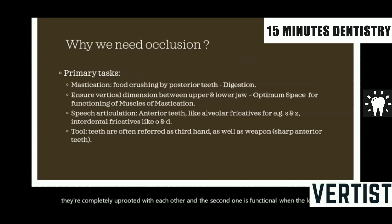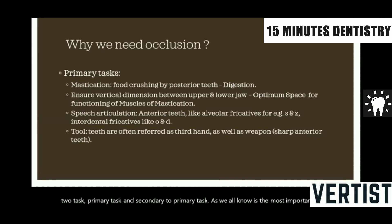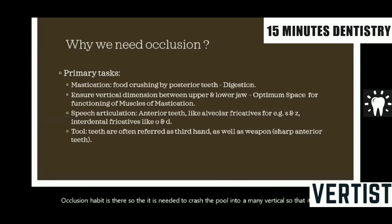Coming to the point of why we need occlusion — there are primary tasks and secondary tasks. The primary task, as we all know, is mastication. Occlusion is needed to crush the food into tiny particles so that it can be digested by the digestive system.